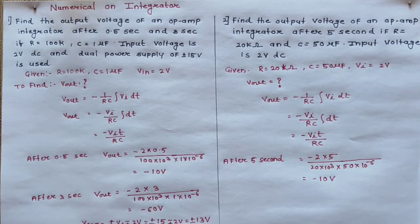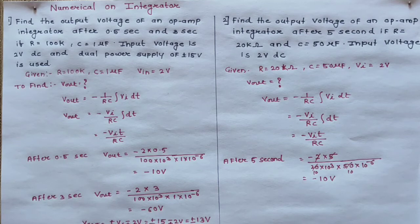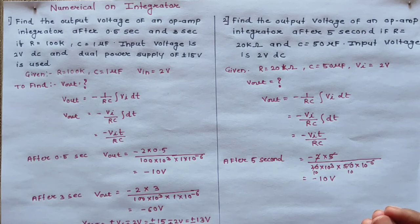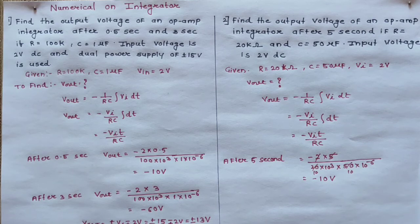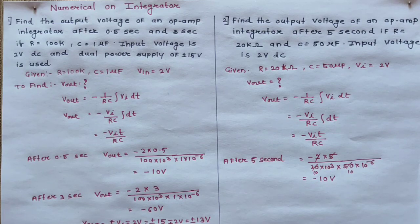That was a simple example with easy calculation. Hope you guys are clear with the numerical on integrator. You can easily score 3 to 4 marks in such type of numericals. Operational amplifier numericals are very easy if you are clear with the output expression for each application. If you know the output expression, you can easily solve any numerical by putting the given data in the formula and finding the output. Any doubt related to this, you can ask me in the comment section. Thanks for watching this video and share with your friends. Thank you.